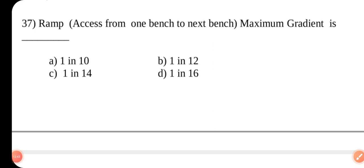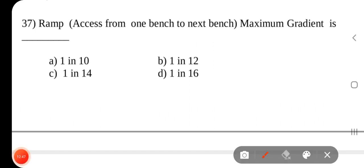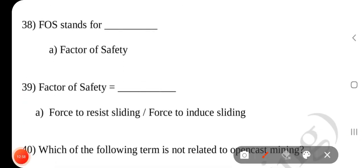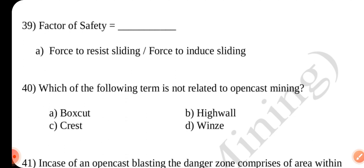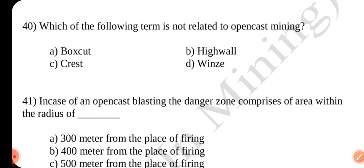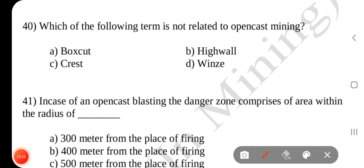Question number 36: The maximum gradient of a haul road is 1 in 16. Answer is C. Question number 37: For a ramp from one bench to the next bench, the maximum gradient is 1 in 10. Answer is A. Question number 38: FOS stands for Factor of Safety. Question number 39: Factor of safety is the force to resist sliding divided by the force inducing sliding. Answer is A. Question number 40: The term not related to open cast mining is — Answer is D — Wins.